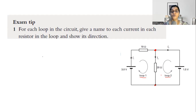Then for each loop in the circuit, give a name to each current in each resistor in the loop and show its direction. For loop 1, the current flowing through the 10 ohm resistor — let it be I1 — and you can decide the direction of current of your choice. I have decided I1 goes from the positive terminal till the junction. Till the junction the current is going to be the same. The current passing through the 20 ohm is a separate branch, so it is a separate current, which is I2.